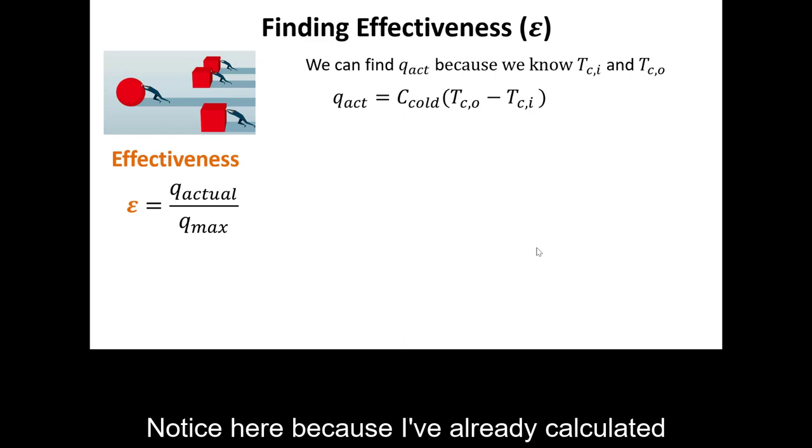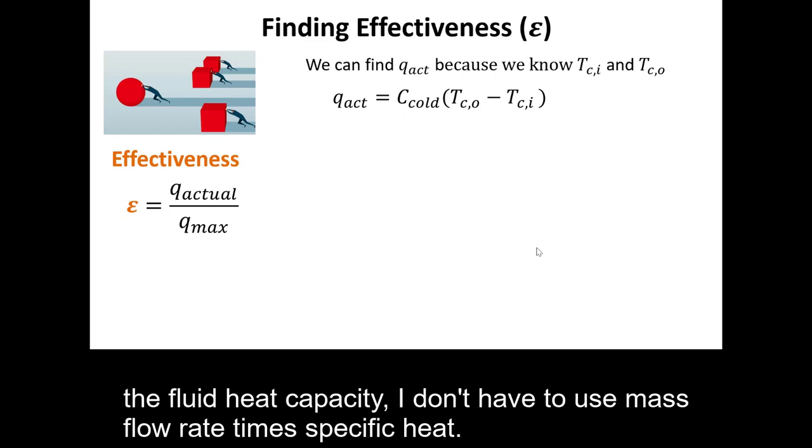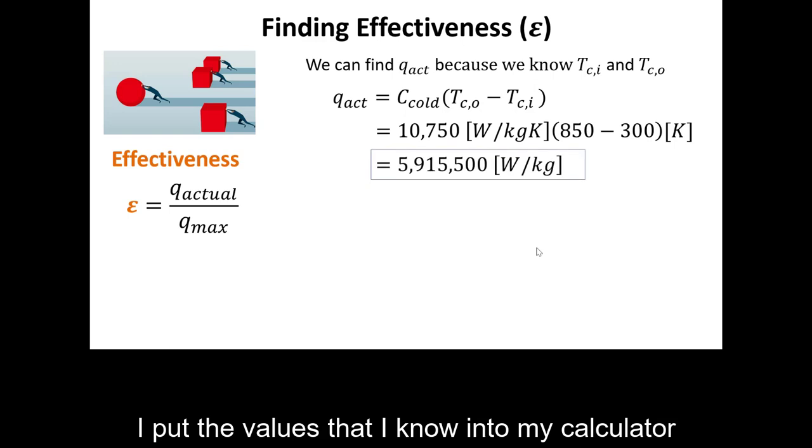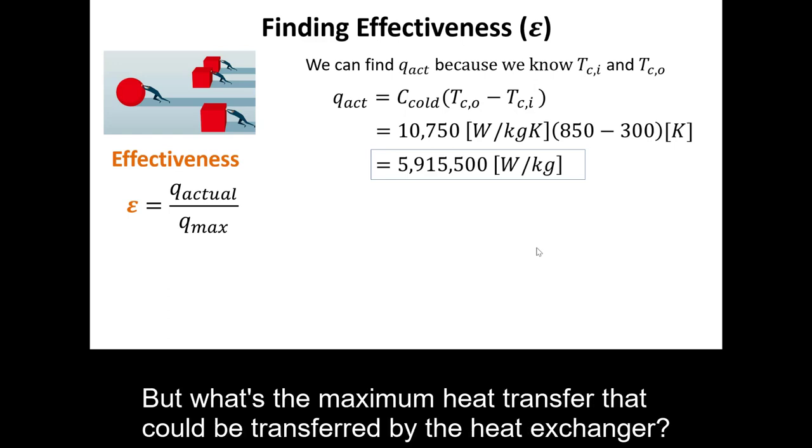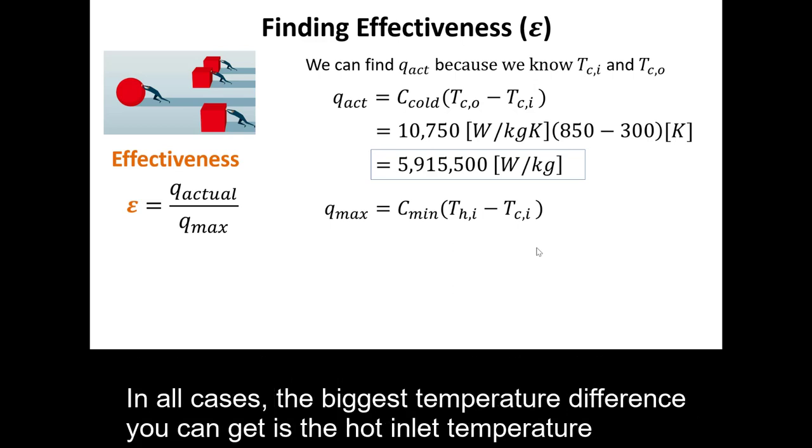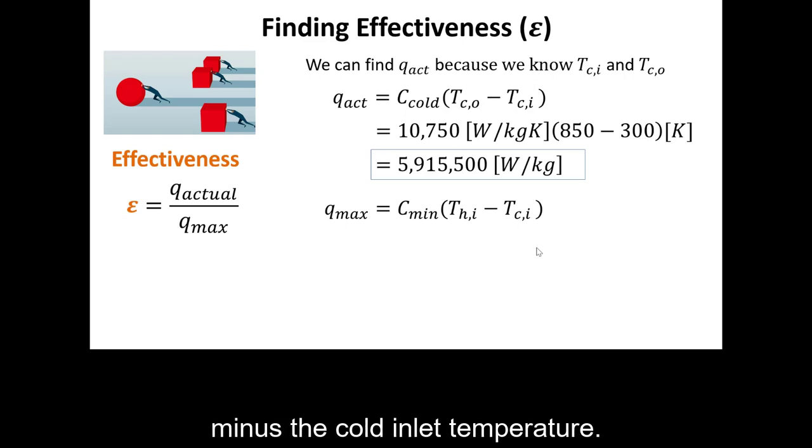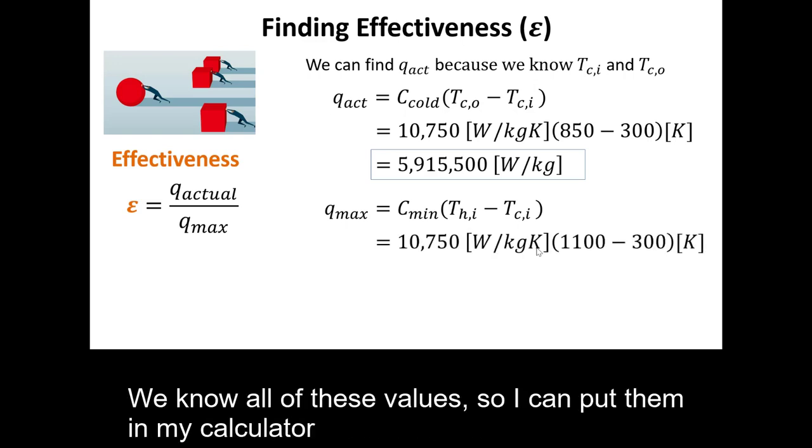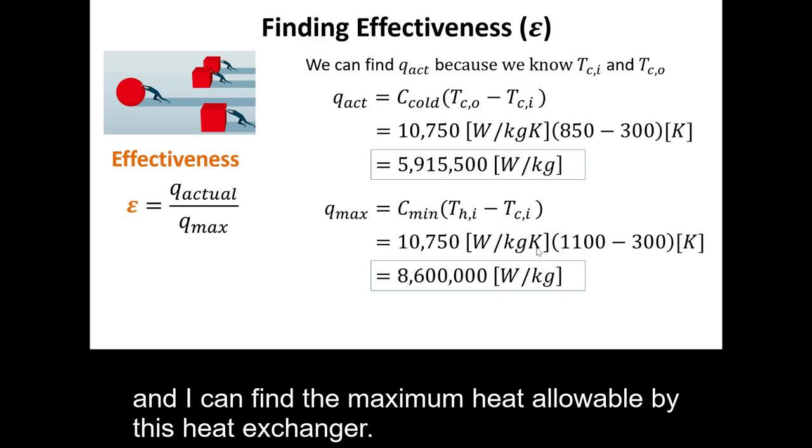Notice here, because I've already calculated the fluid heat capacity, I don't have to use M dot times C P. I put the values that I know into my calculator and I find how much heat is actually transferred by my heat exchanger. But what's the maximum heat transfer that could be transferred by the heat exchanger? In the maximum case, we take the minimum fluid heat capacity and multiply by the biggest temperature difference we can get. In all cases, the biggest temperature difference you can get is the hot inlet temperature minus the cold inlet temperature. We know all of these values, so I can put them in my calculator and I can find the maximum heat allowable by this heat exchanger.